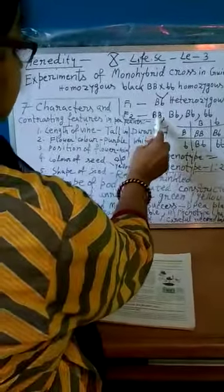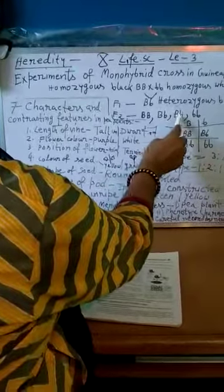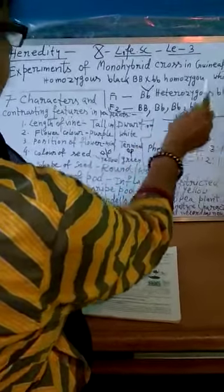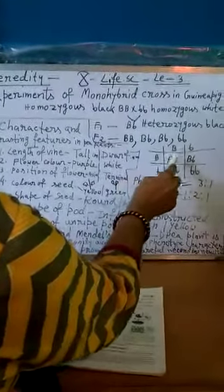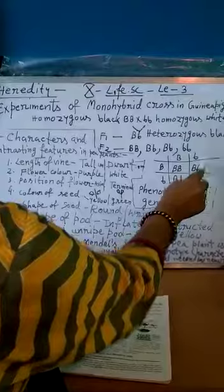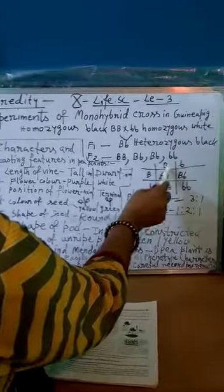We cross capital B capital B, capital B with small b, capital B small b, small b small b. The results are: capital B capital B, capital B small b, capital B capital B, capital B small b, capital B small b, capital B small b, small b small b. One, two, three, four.